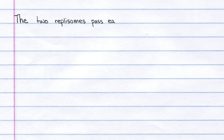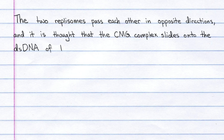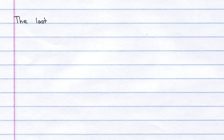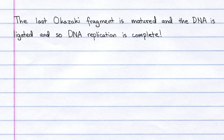The two replisomes pass each other in opposite directions, and it is thought that the CMG complex slides onto the double-stranded DNA of the last Okazaki fragment. The last Okazaki fragment is matured, and the DNA is ligated, and so DNA replication is complete.